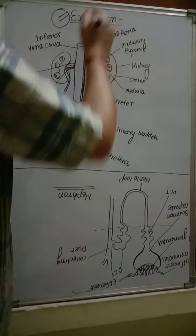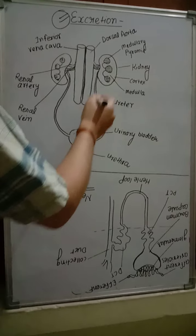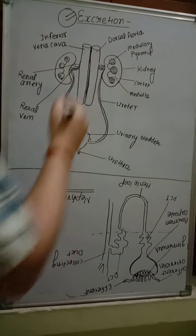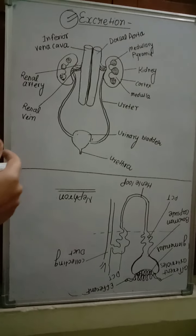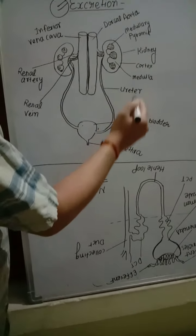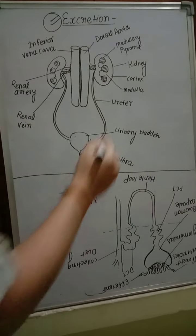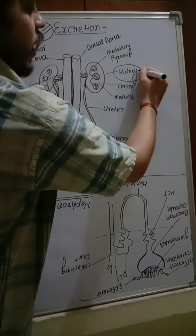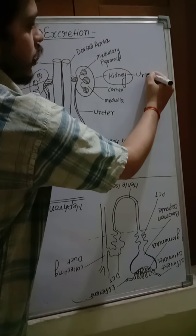The excretion system of human contains one pair of kidney. Kidney is located in thoracic, third number vertebrae. Kidney and ureter, urinary bladder and urethra. What is the function of kidney? Kidney helps in the formation of urine.